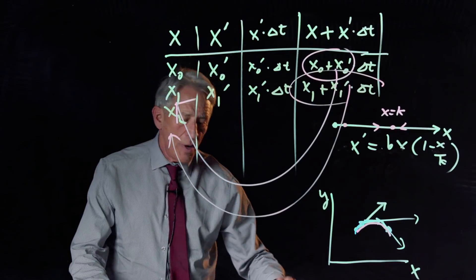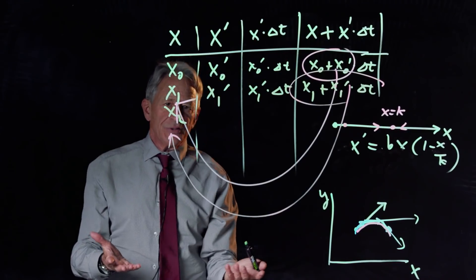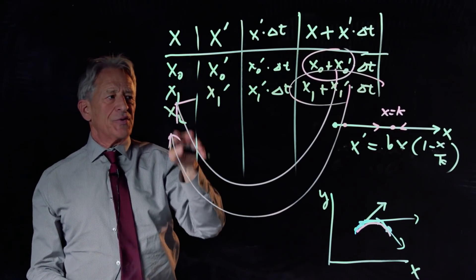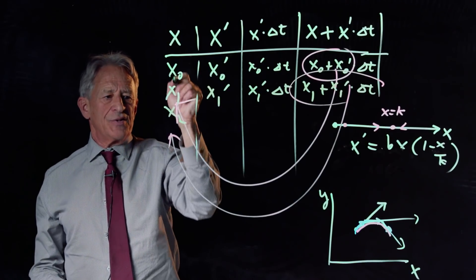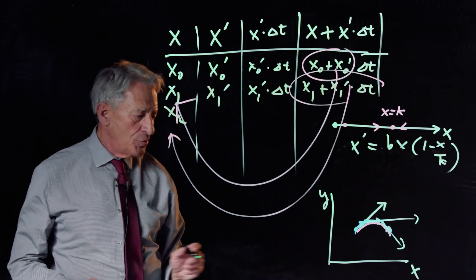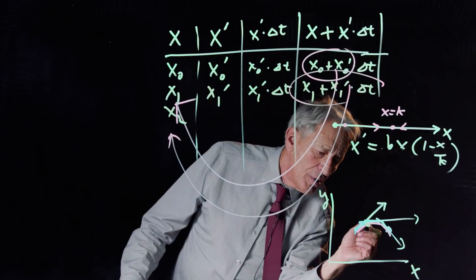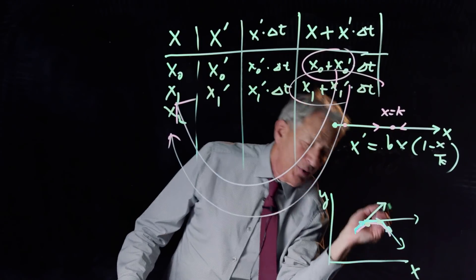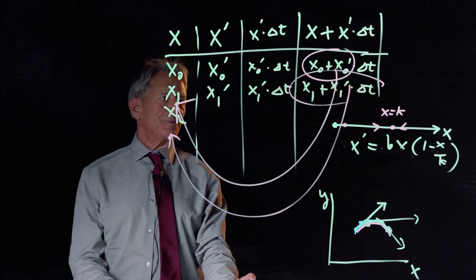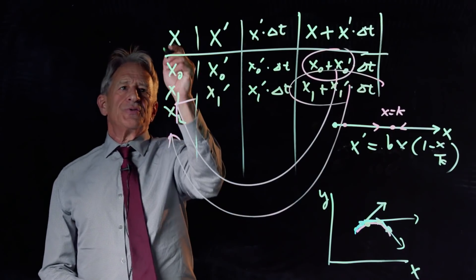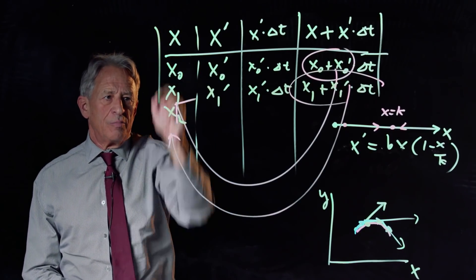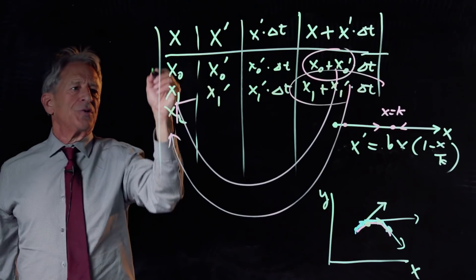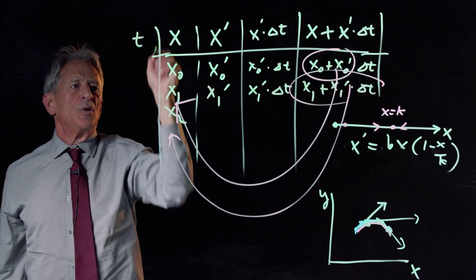And in that way, we generate a sequence of finite steps x0, x1, x2. And those are these points in the Euler approximation. So, to be totally complete, I should really put in a first column, which is t.